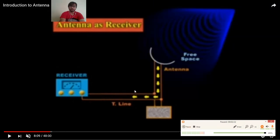In this animation, antenna acts like a receiver because electromagnetic waves are again converted into electrical signal and it will be received by antenna.